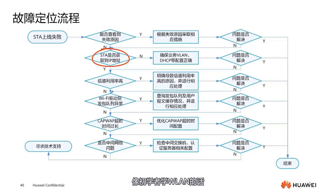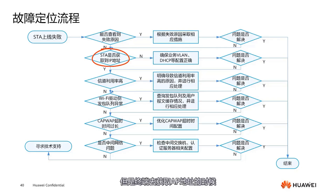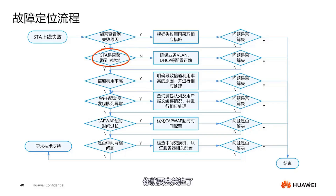For beginners learning WLAN, they might often get stuck here. Everything seems fine with the AP, but there's an issue when the terminal tries to obtain an IP address — that's when you need to pay attention. Check whether the business VLAN is allowed, or if there is a problem with the DHCP configuration.